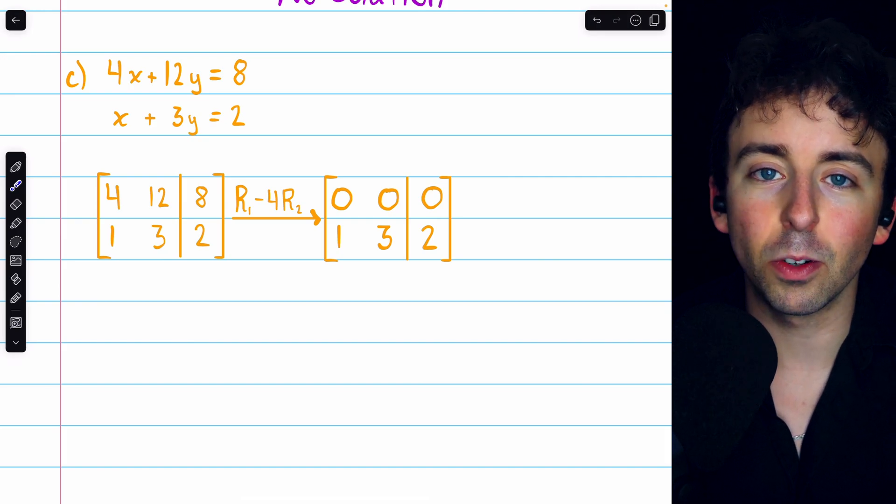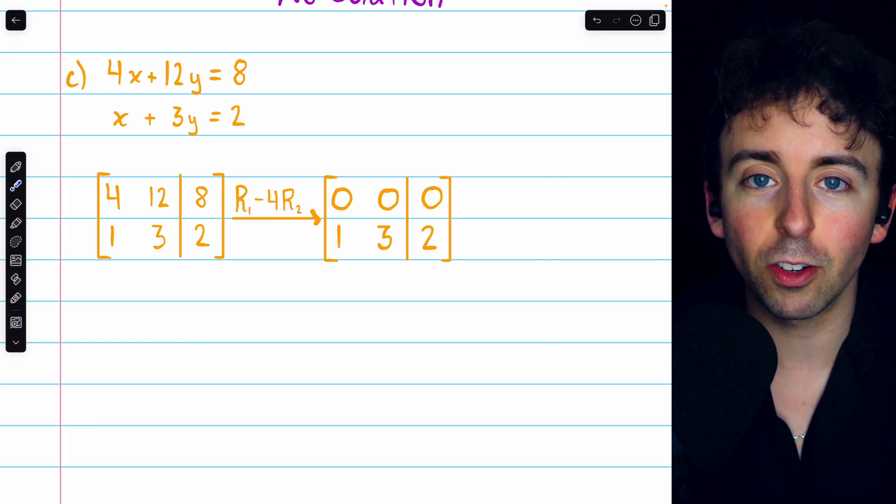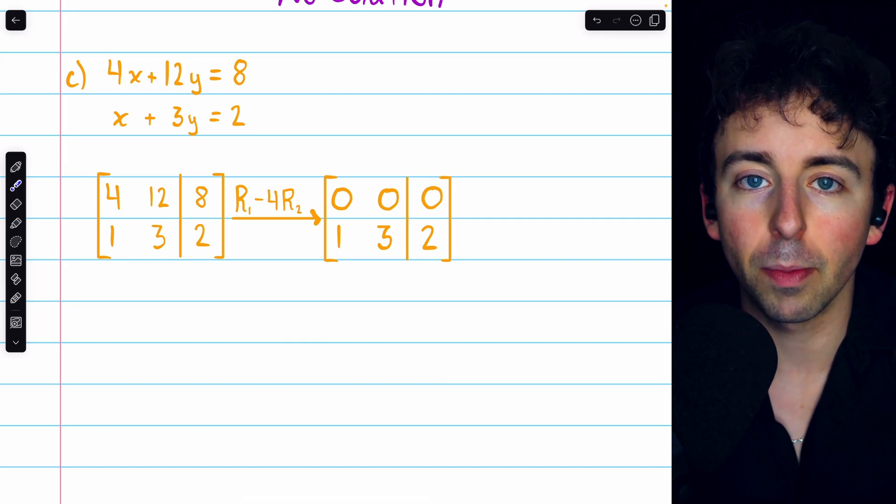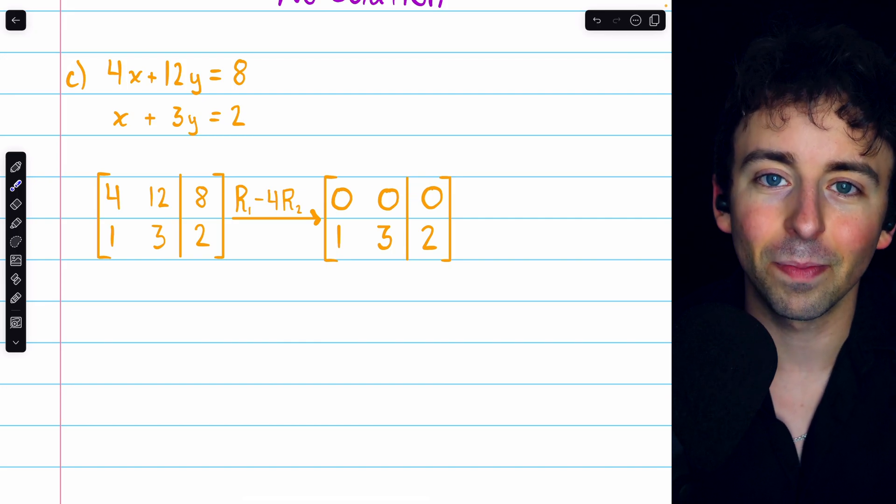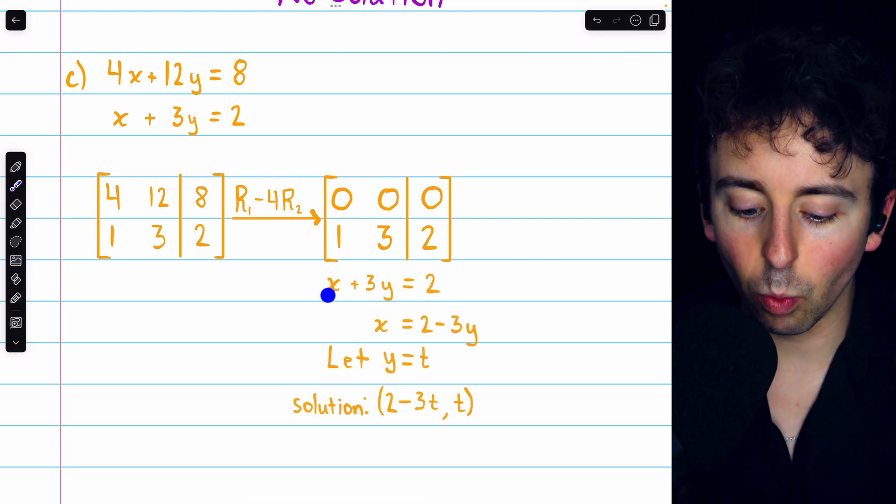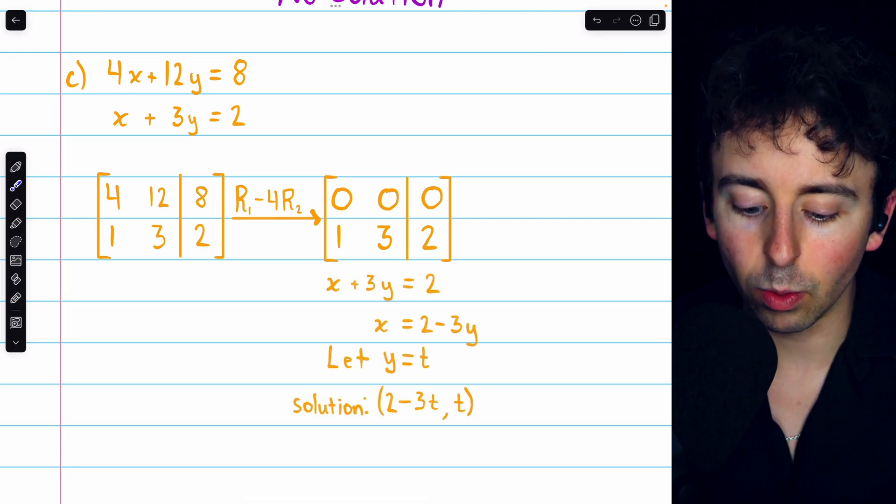If we were specifically trying to do Gaussian or Gauss-Jordan elimination, we would want to swap these rows so that we have these zeros at the bottom of the matrix, but as for solving the system, that doesn't really matter. We're pretty much done. From row 2, we have that 1x plus 3y equals 2.